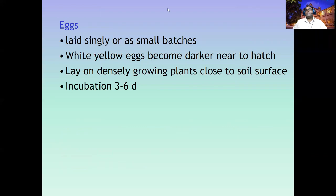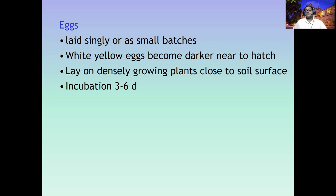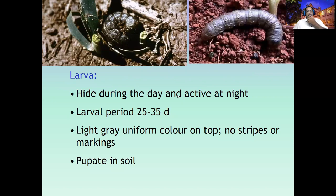Eggs are laid singly or in groups — whitish yellow in color, becoming darker as the hatching time approaches due to development of immature stages inside. Eggs are laid very close to the soil surface in shady, densely grouped plant areas, because these moths are nocturnal and prefer shade. The incubation time is a maximum of seven days. Larvae hide during the daytime and are active at night.